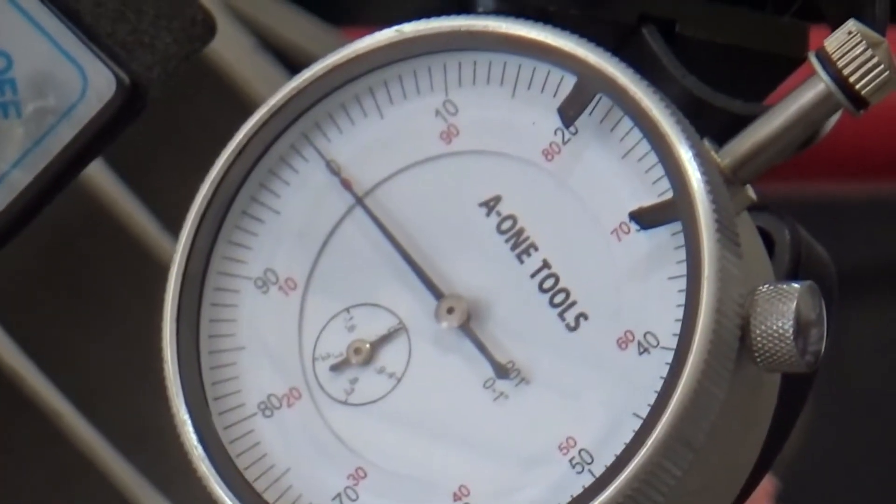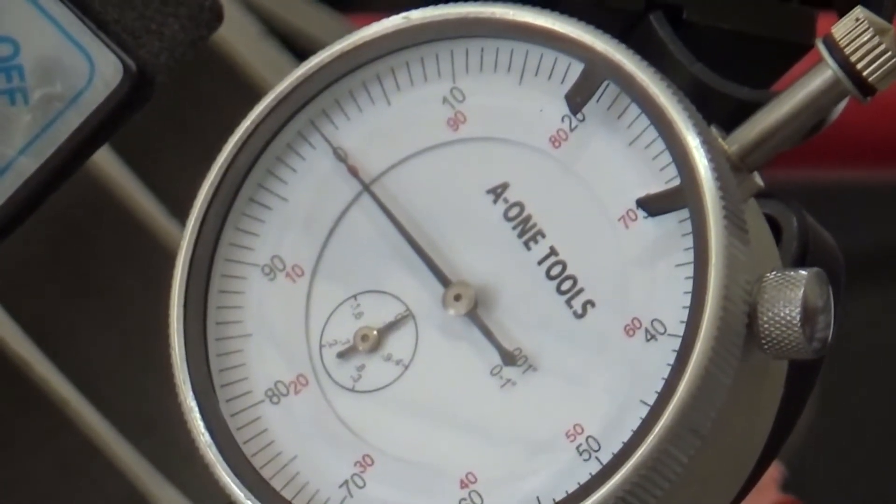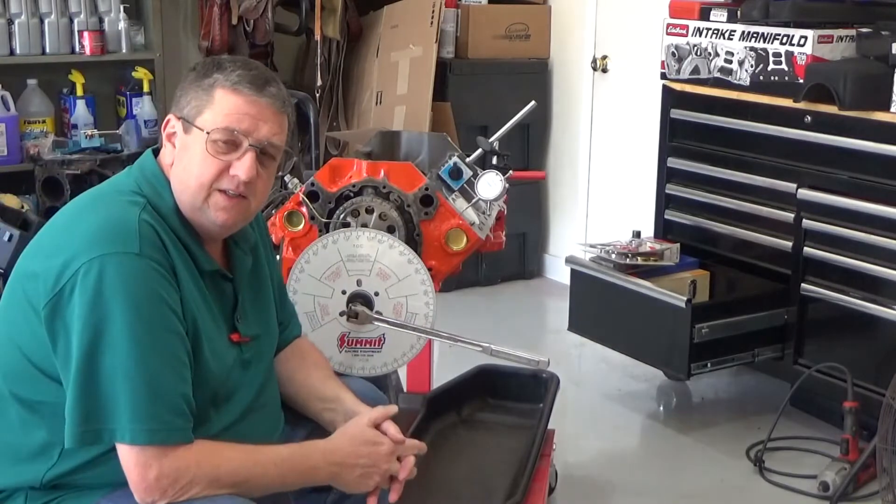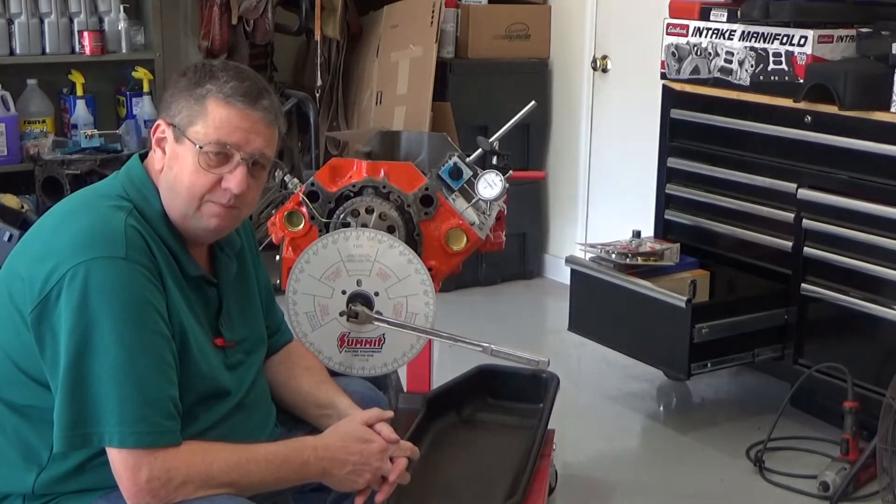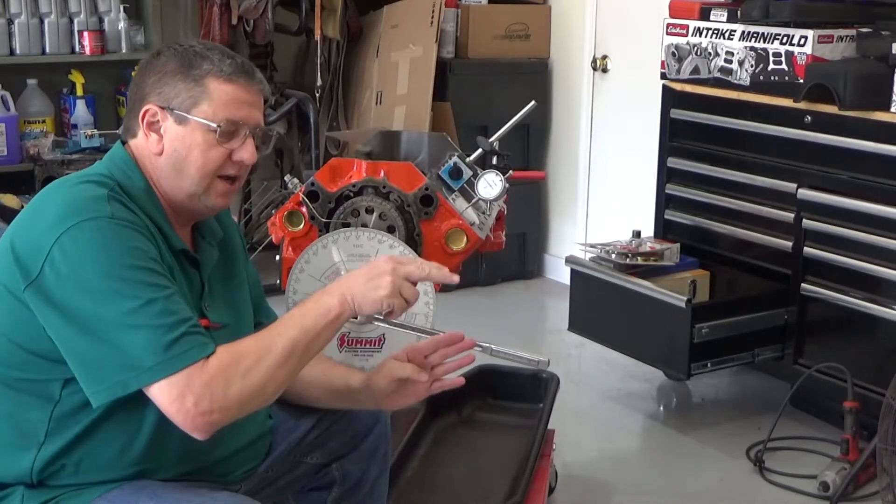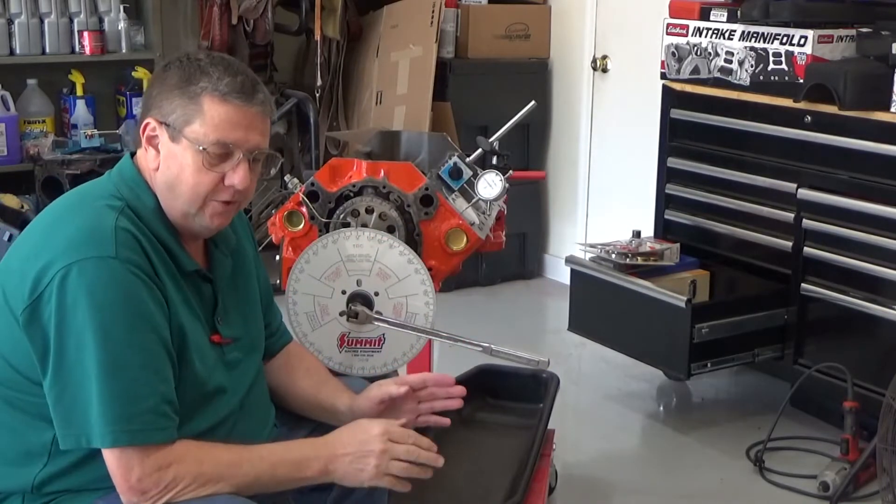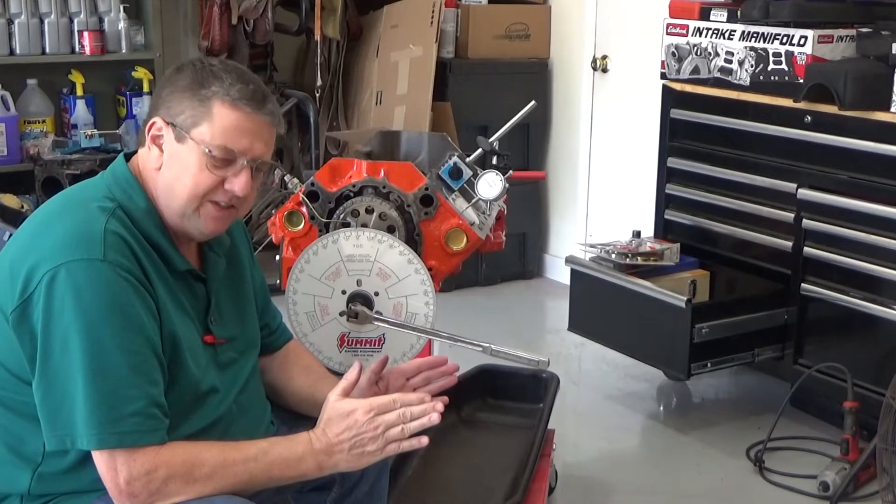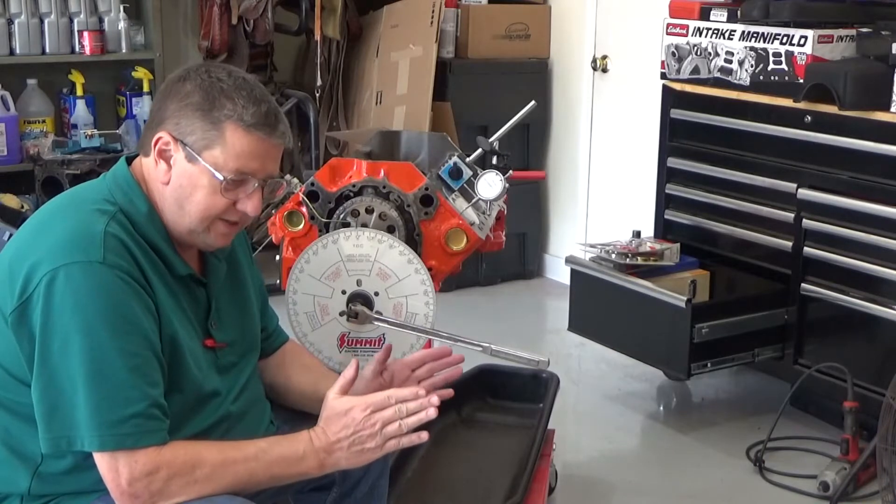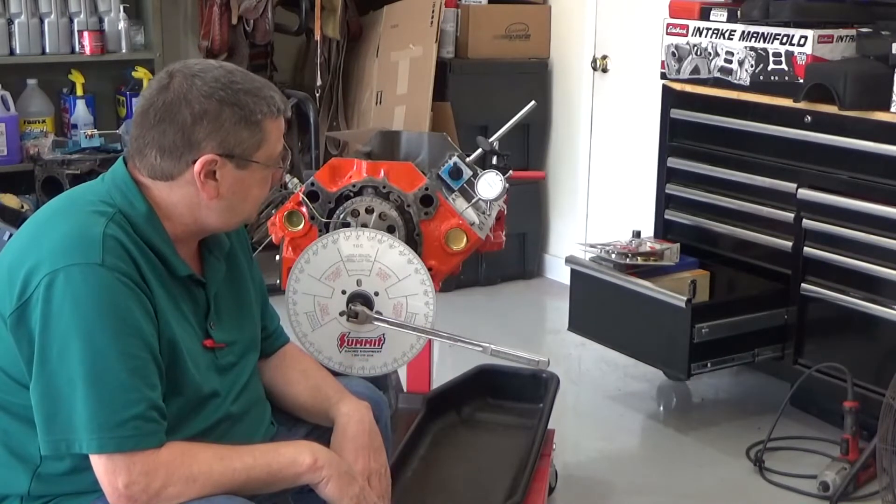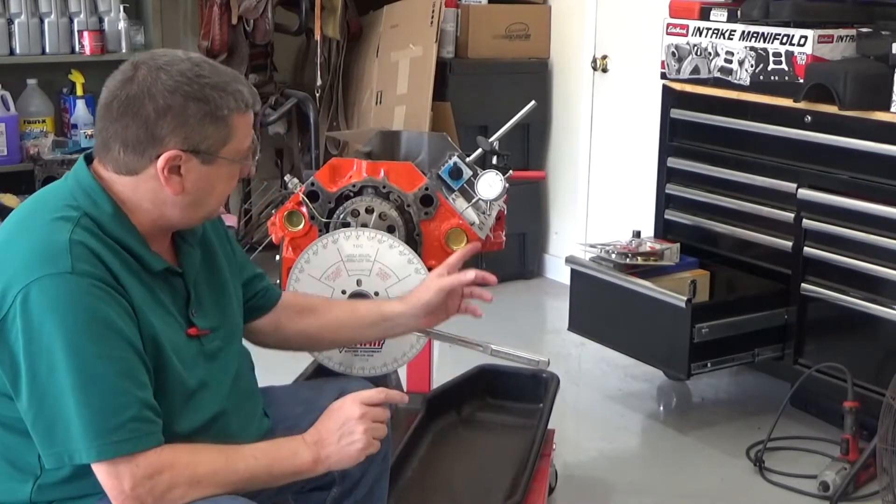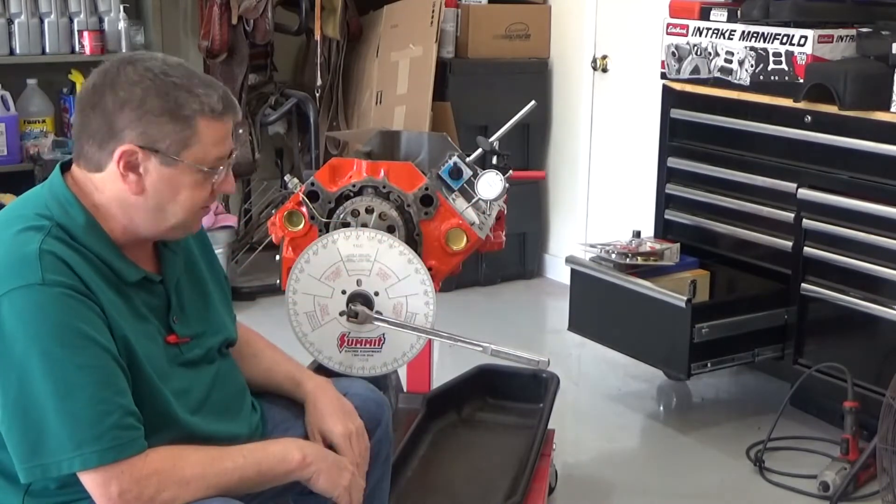Hopefully you can see that that dial indicator is on zero also. In getting this set up to find true top dead center, there are a few degrees where the piston doesn't move as the crankshaft comes up as it's breaking over. You want the crankshaft in the center of that period where it doesn't move.